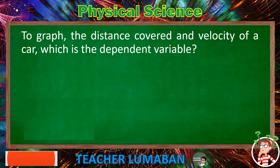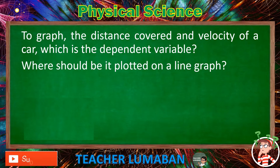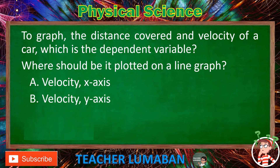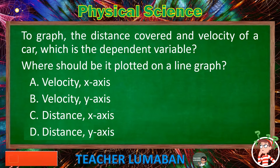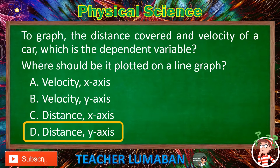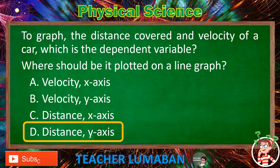To graph the distance covered and velocity of a car, which is the dependent variable and where should it be plotted on a line graph? Letter A: Velocity, x-axis. Letter B: Velocity, y-axis. Letter C: Distance, x-axis. Letter D: Distance, y-axis. The correct answer is letter D, distance y-axis. The dependent variable distance should be plotted on the y-axis of a line graph.